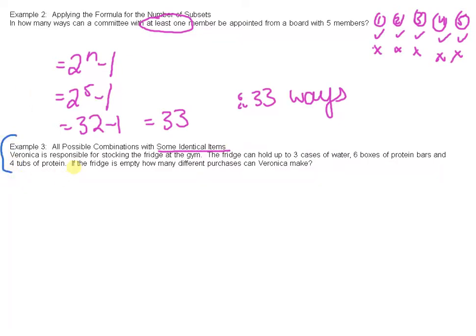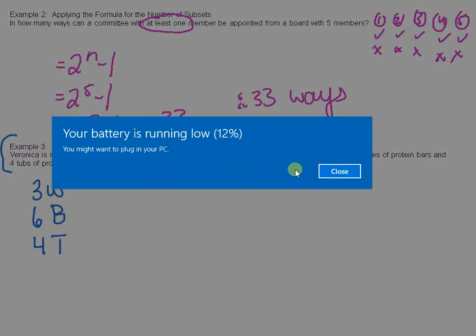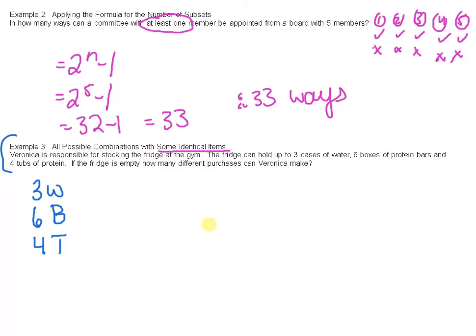So Veronica is responsible for stocking the fridge of the gym. The fridge can hold up to three cases of water, six boxes of protein bars, let's call it B for bars, and four tubs of protein, let's call it T for tubs, so we don't get those confused. If the fridge is empty now.